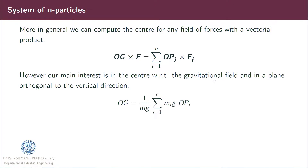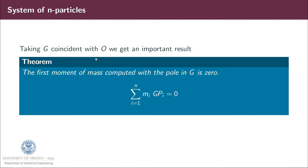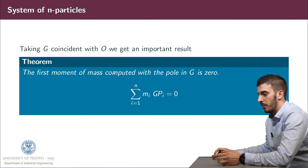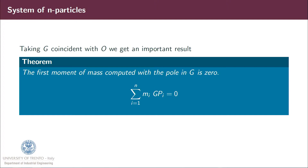Our main interest is in finding the center of mass with respect to the gravitational field and in a plane orthogonal to the vertical direction. We simplify the previous formulation and obtain that OG is equal to 1 over M times the sum from i equal to 1 to N of mi·g·OPi. Simplifying the gravitational acceleration, we find OG equal to 1 over M times the sum of mi·OPi. Taking G coincident with the center O, we get the important result that the first moment of the mass computed with respect to the pole G is equal to zero, meaning our system is in equilibrium with respect to G.